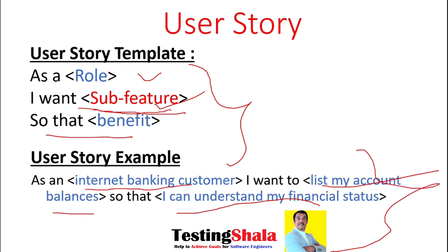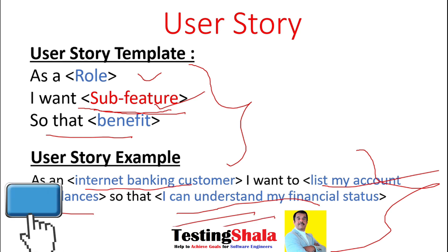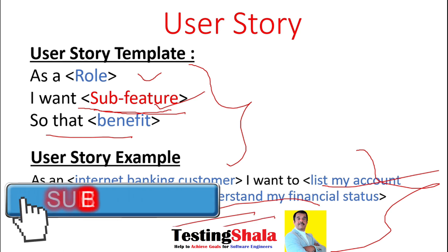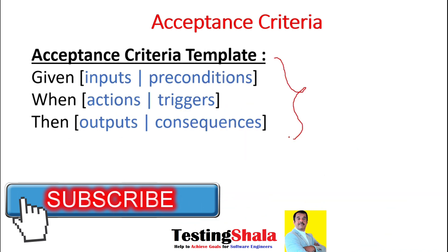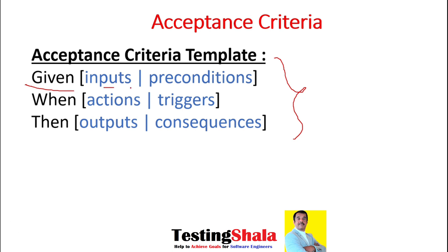The acceptance criteria template would look like something like this: it starts with 'Given,' followed by the inputs or preconditions that will be provided for this acceptance criteria.